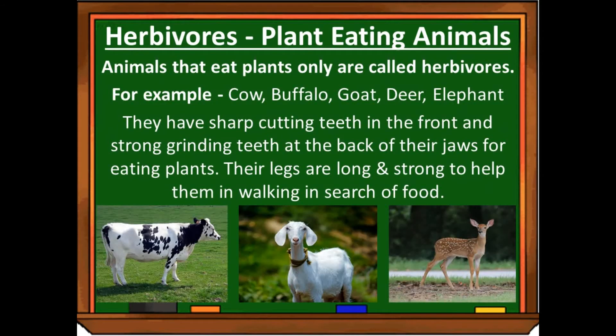First we will discuss herbivores. Herbivores are also known as plant-eating animals. Herbs means plants. For example, cow, buffalo, goat, deer, elephant, etc. They have sharp cutting teeth in the front.